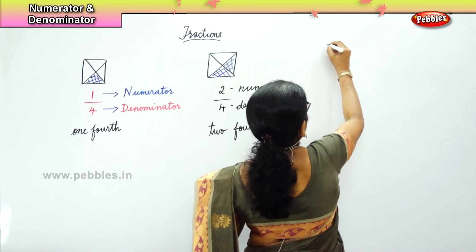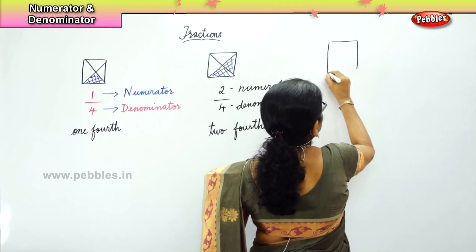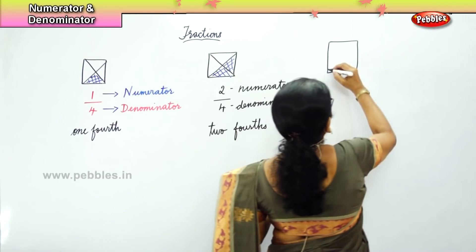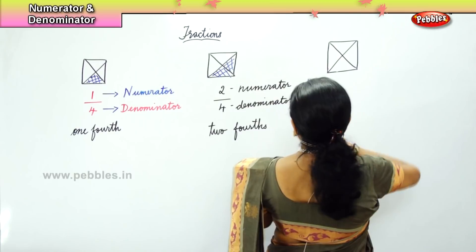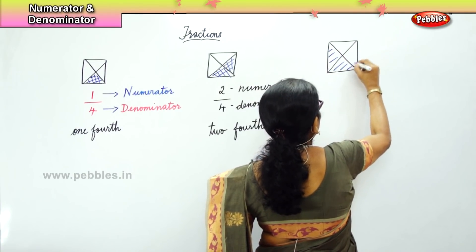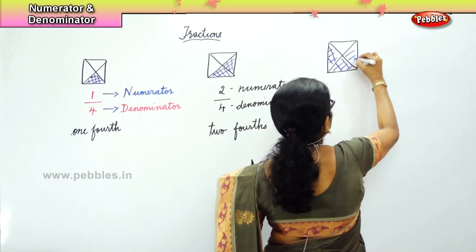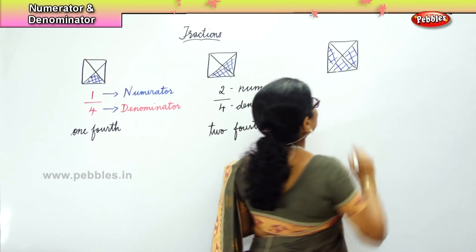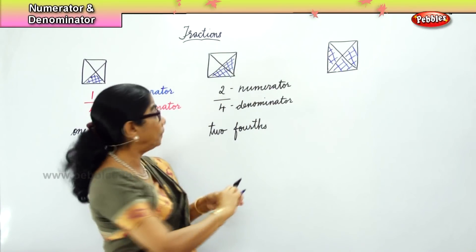I have another picture for you. This time we are dividing it into 4 parts again, and I am going to shade 3 quarters. 1, 2, and 3 quarters are shaded. How do we write this? 3 parts out of 4 parts.